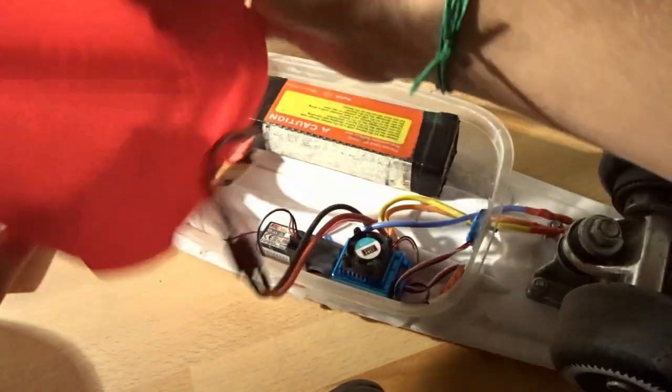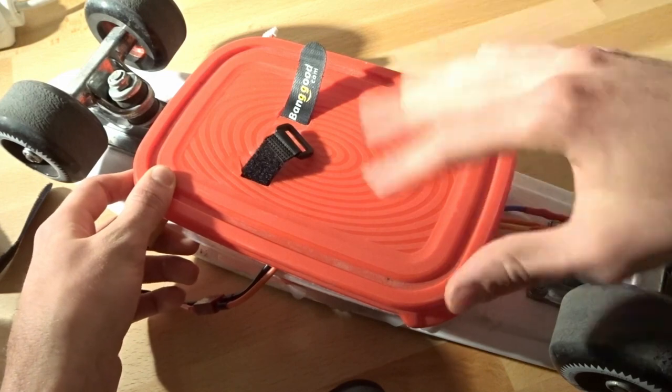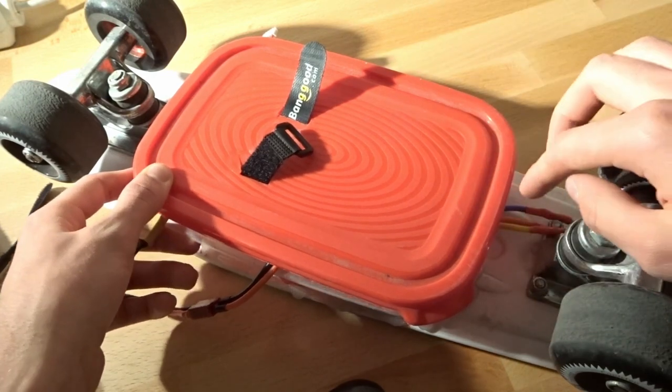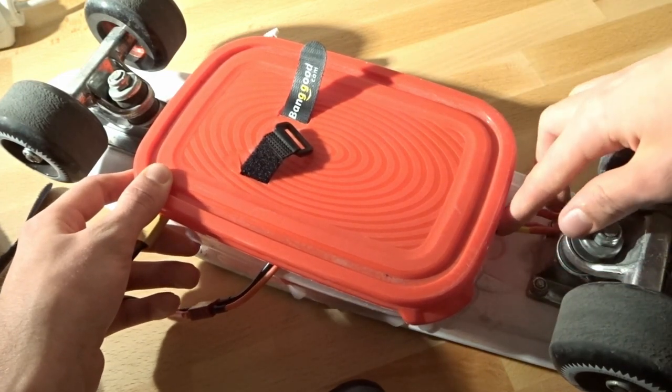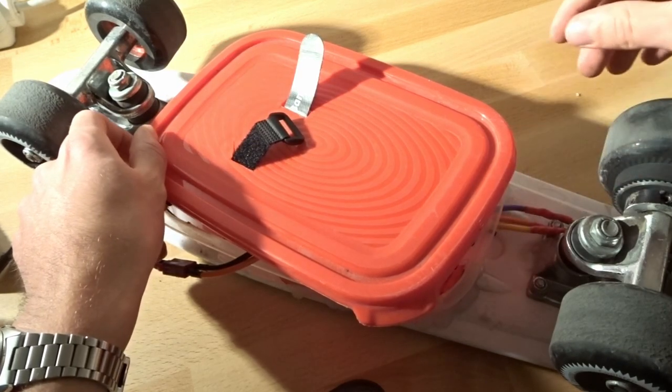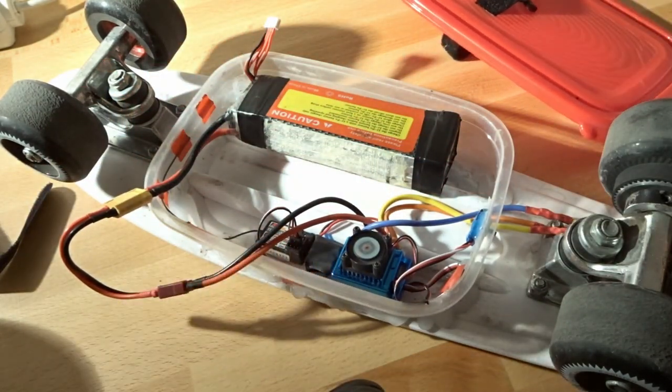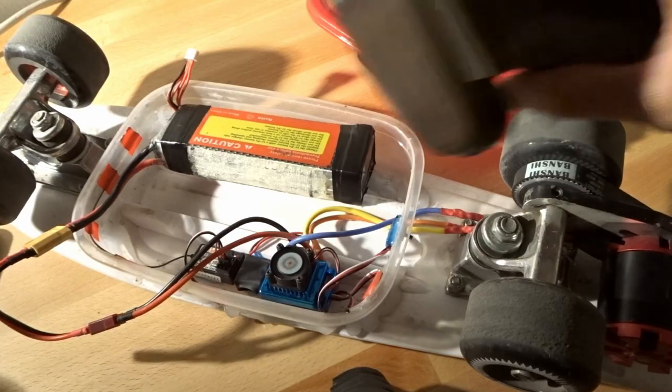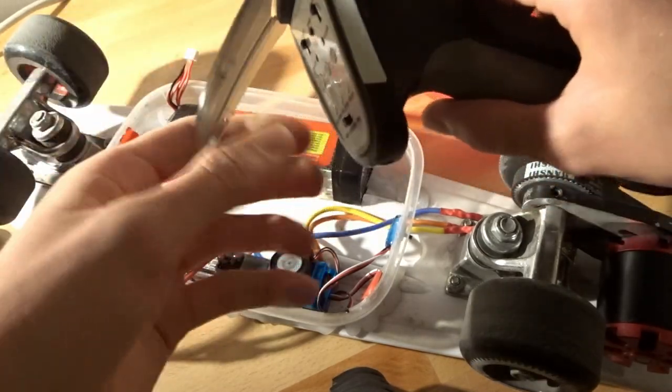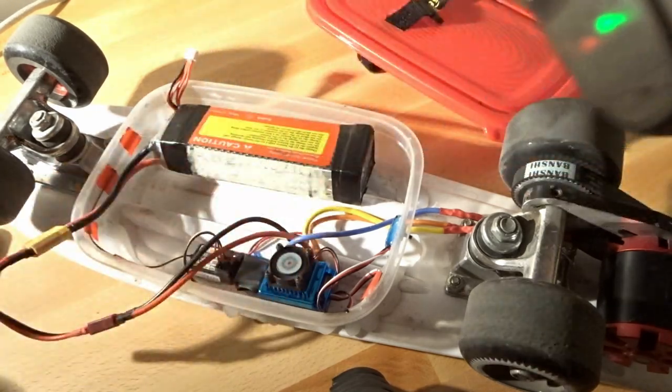Usually if the battery is inside, this box is closed, so I can turn the whole setup on and off by just flipping the switch on the back side. You can hear the electronic speed controller's fan just going on. And if I turn on my transmitter, you will see that my setup works.